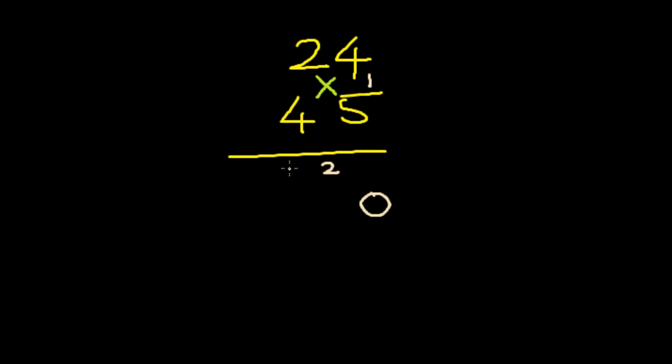So I'll write here 26 plus this carry 2 is 28. Next, I'll multiply these two digits. That is 2 times 4 is 8. 8 plus 2 is 10. The answer is 1080.